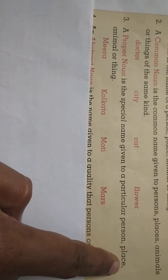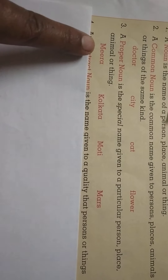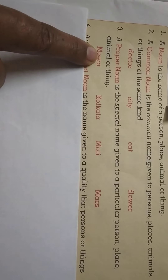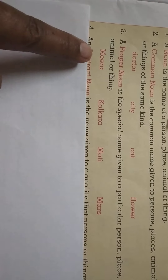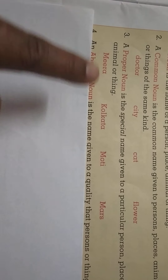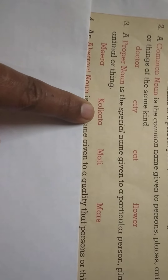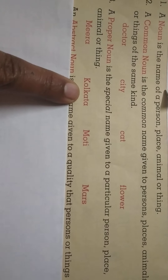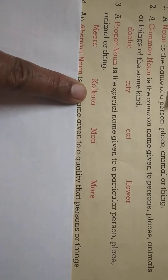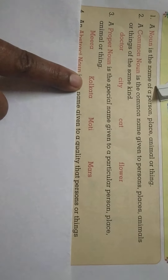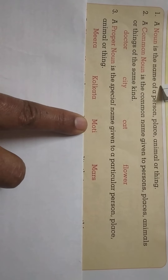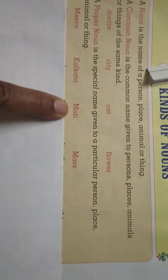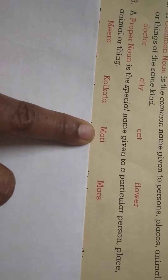Next is proper noun. A proper noun is a special name given to a particular person, place, animal, or thing. For example, 'Meera' — Meera is a special name for that particular girl. Next is 'Kolkata' — Kolkata is the name of a city. We can't say Mumbai is Kolkata; Mumbai is a different city and Kolkata is a different city, so Kolkata is a special name for that city.